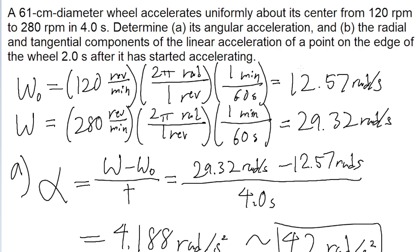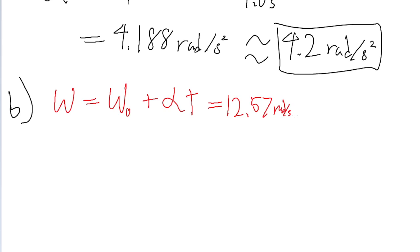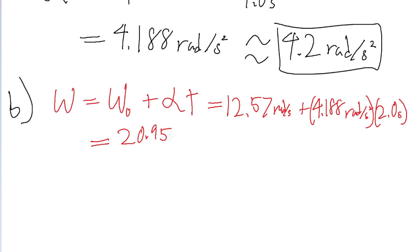Now let's get on to Part B, which asks about the tangential and radial accelerations on a specific point on the edge of the wheel two seconds after the acceleration has begun. The first thing we need to figure out is the instantaneous angular velocity at the two-second mark. Using kinematics, the speed at a certain time equals the initial speed plus the acceleration multiplied by the time interval. So the initial angular speed of 12.57 radians per second plus 4.188 radians per second squared multiplied by two seconds gives us an instantaneous angular velocity of 20.95 radians per second.